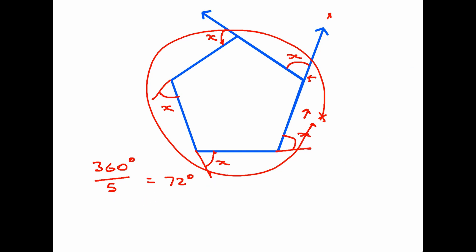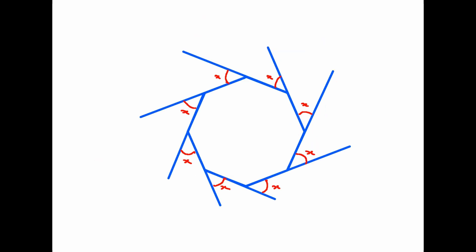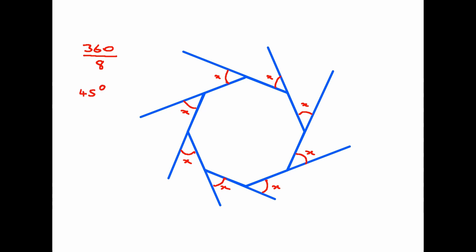Each turn we made was the same number of degrees, so if we take 360 and divide it by five, that gives us the exterior angle of a regular pentagon, which is 72 degrees. This would not work with an irregular polygon because all the angles are different. For the octagon — the eight-sided shape — exactly the same logic applies: 360 divided by eight gives an exterior angle of 45 degrees.